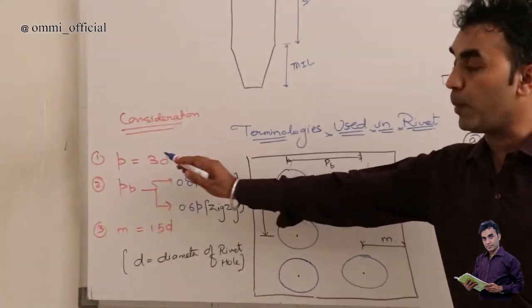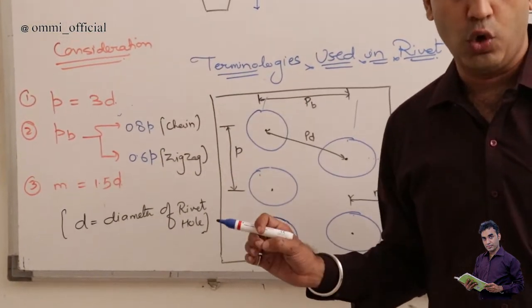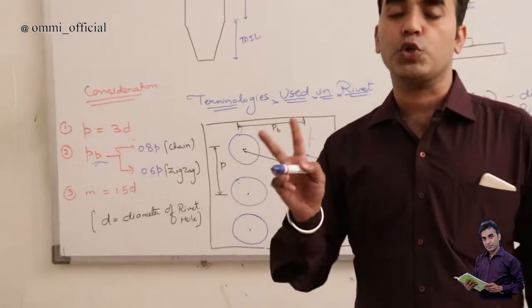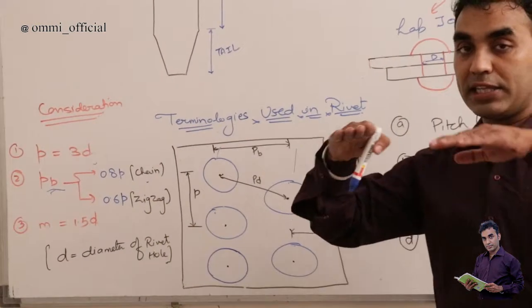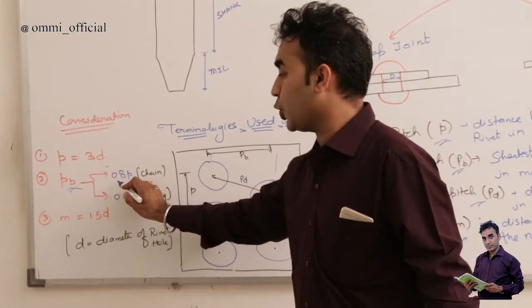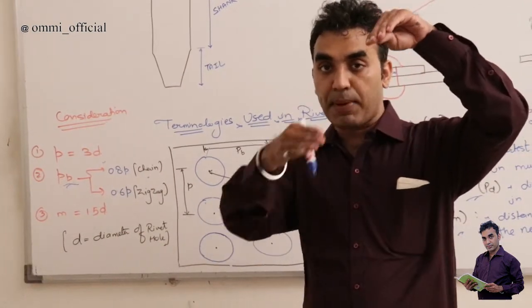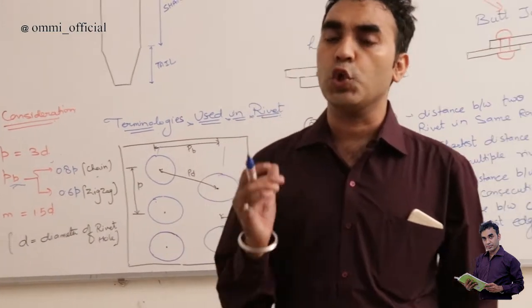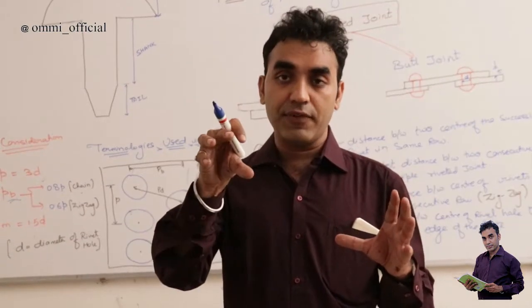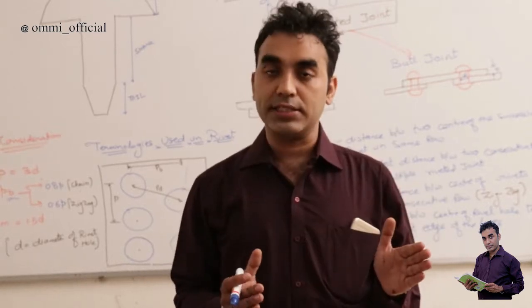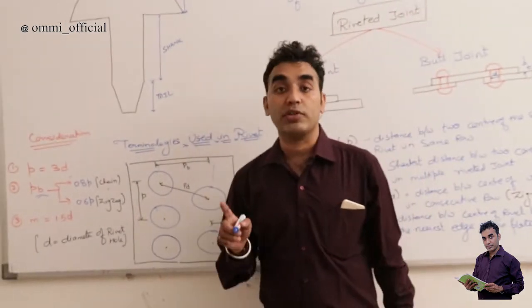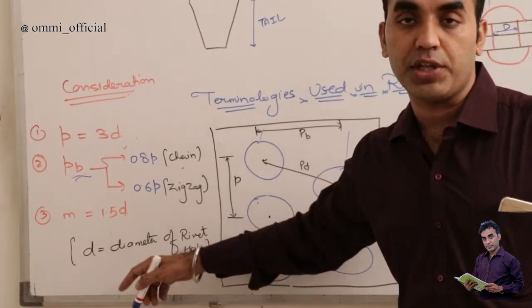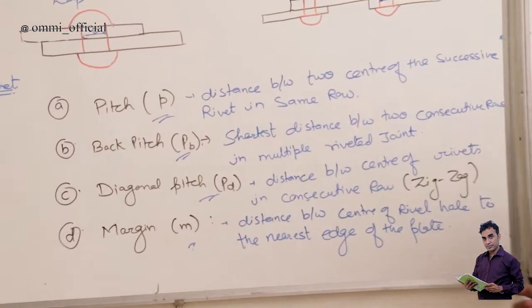The empirical relations between these terms: the pitch p is always taken as 3 times the diameter of the rivet hole. For back pitch pb, there are two conditions — for a chain (parallel) arrangement, pb = 0.8 × p; for a zigzag arrangement, pb = 0.6 × p. For the margin, for safety we always keep the rivet at a safe distance from the edges, so the margin is always taken as greater than or equal to 1.5 times the diameter d of the rivet hole.